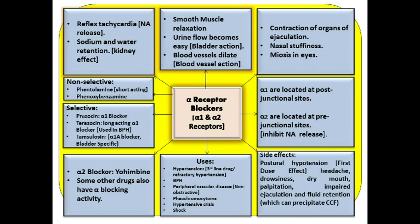For selective alpha-1 blockers, we have prazosin, terazosin (a long-acting alpha-1 blocker), and more specifically tamsulosin, which is an alpha-1A blocker. The alpha-1A receptor is very specific for the bladder, eliminating many vascular side effects related to alpha blockade. We also have doxazosin. Terazosin and tamsulosin are reserved for benign prostatic hypertrophy since they can be given just once a day.